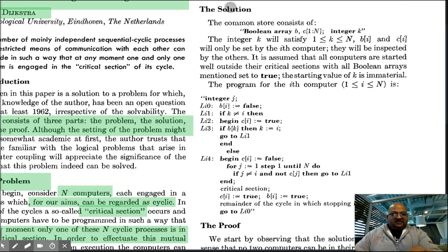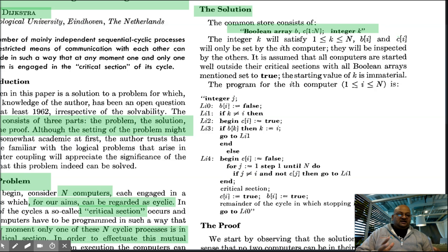Okay, so here is Dijkstra's solution. He assumes that there are three items that all the processes share in common memory. Two Boolean arrays, B and C, each of length N, where N is a number of processes, and an integer K. K is going to vary between one and N.